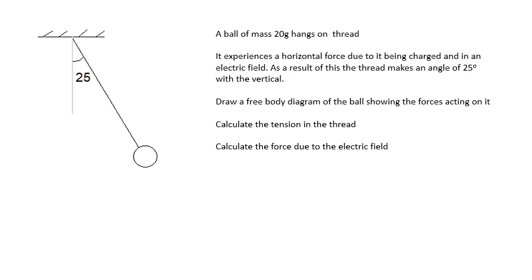Here's another question for you to have a go at. A ball of mass 20 grams hangs on the thread. It experiences a horizontal force due to it being charged in an electric field. As a result of this, it makes an angle of 25 degrees with a vertical. Draw a free body diagram of the ball showing the forces acting on it. Calculate the tension in the thread. Calculate the force due to the electric field. A free body diagram means just draw the ball on its own. Draw the ball on its own. Show the forces acting on it. I'm just going to leave the ball there. What forces are acting on it? Well, it's not in deep space, so we have W. We have the tension in the thread, T. And we have this force due to the electric field, which I'm going to call that E. Why not? So this angle here will also be 25 degrees.